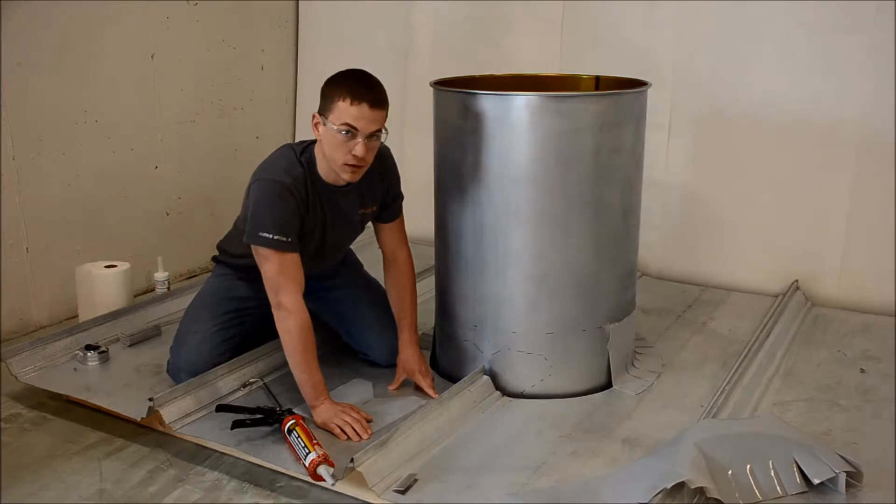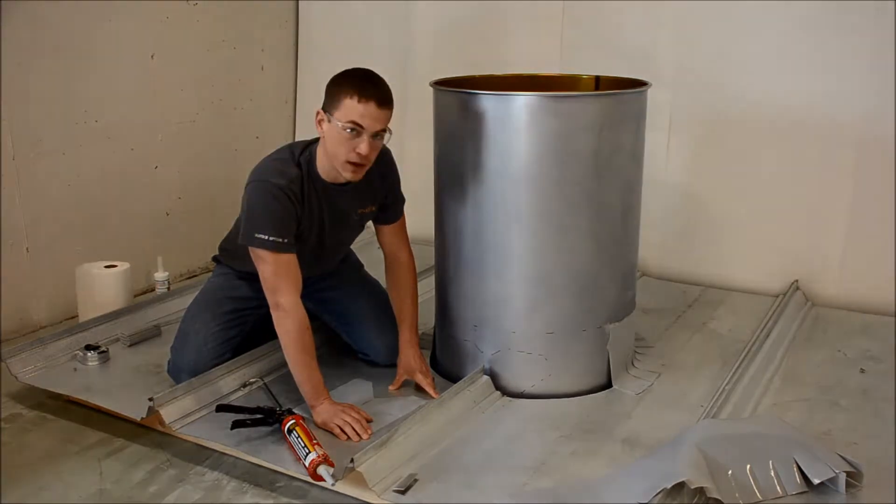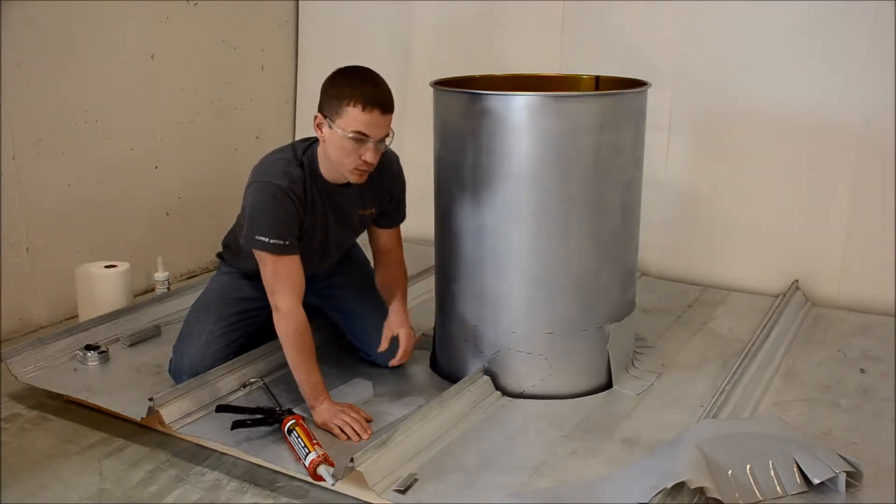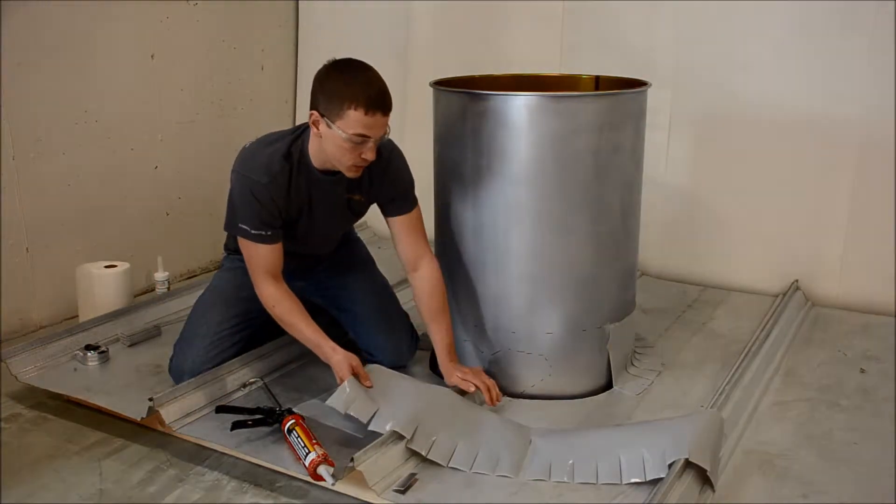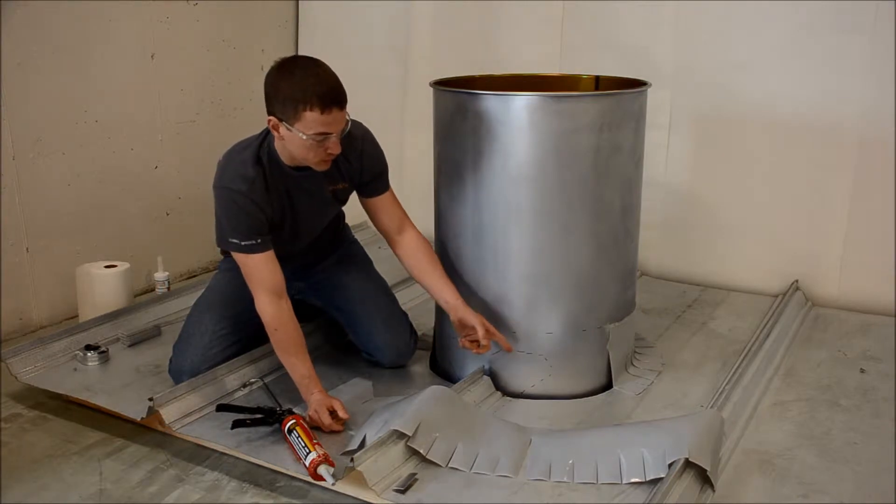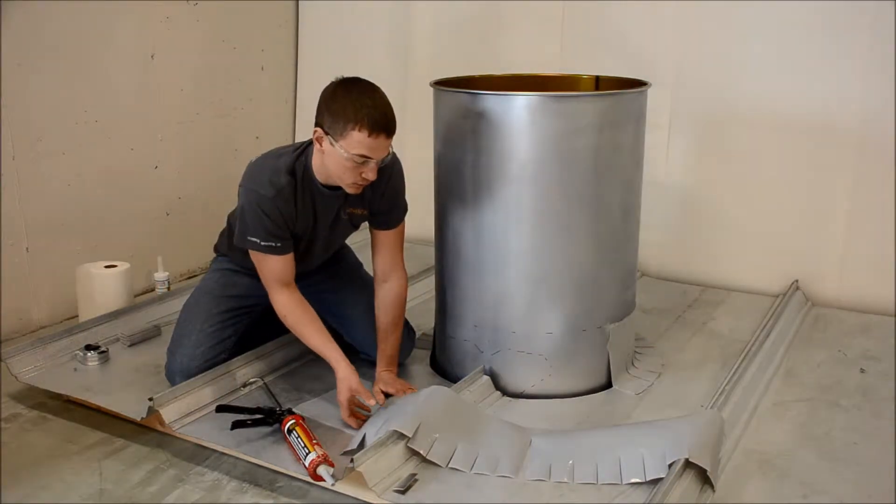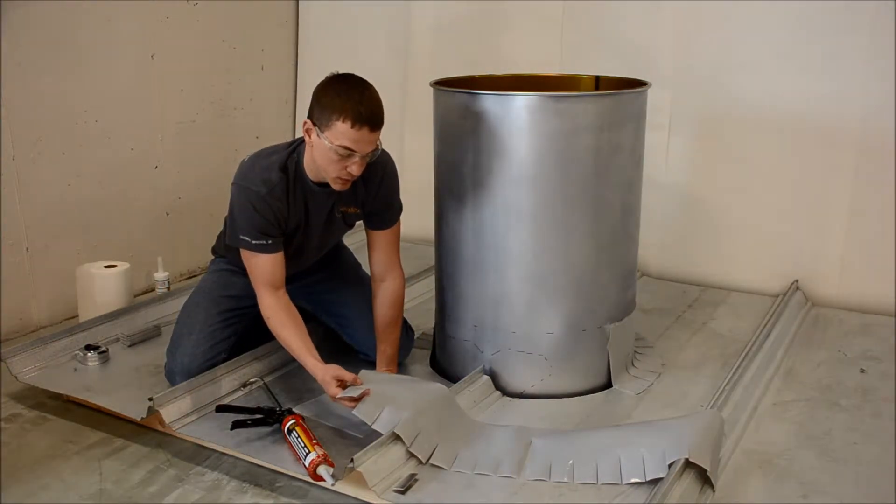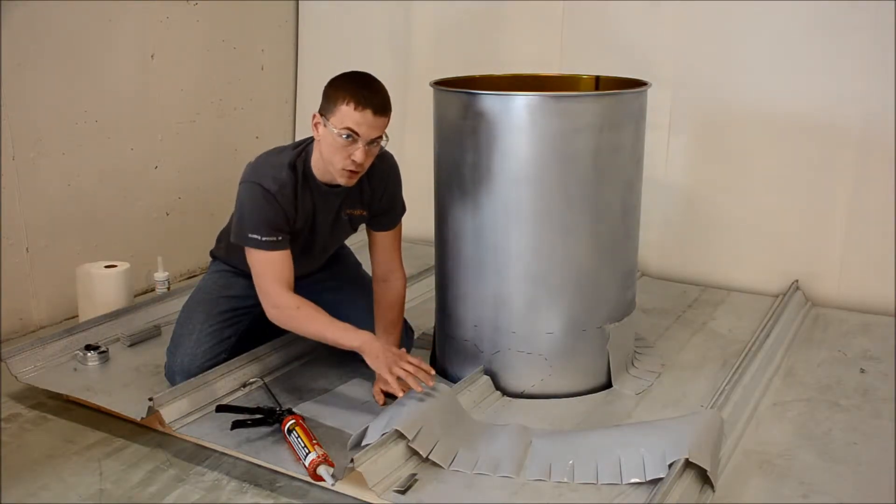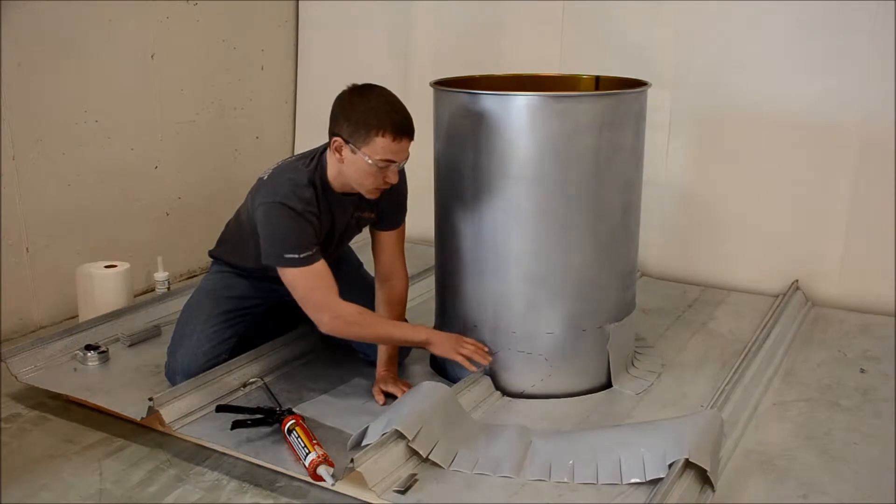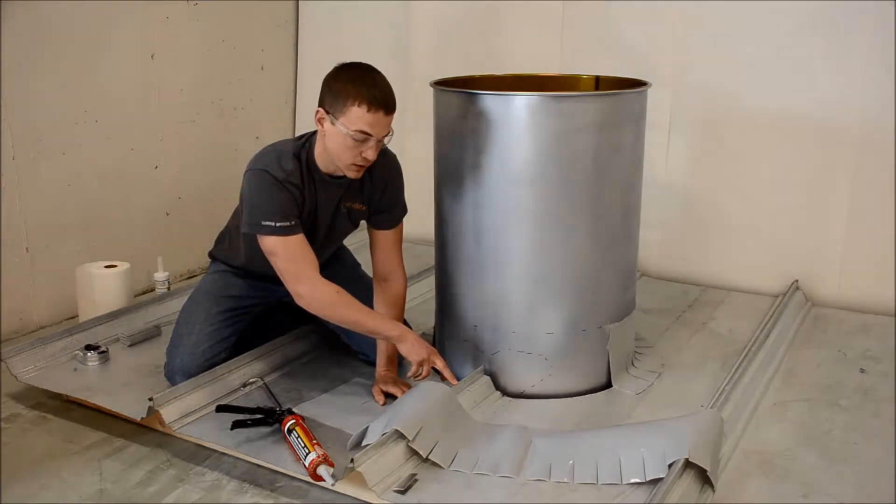This will tell me exactly where I need to put my adhesive so I can press it in place and have a nice seal. We also pre-cut a piece to go around the perimeter of our penetration. This particular piece has some relief cuts in it and that will actually allow us to conform to this particular shape as well as go over the top of the standing seam.